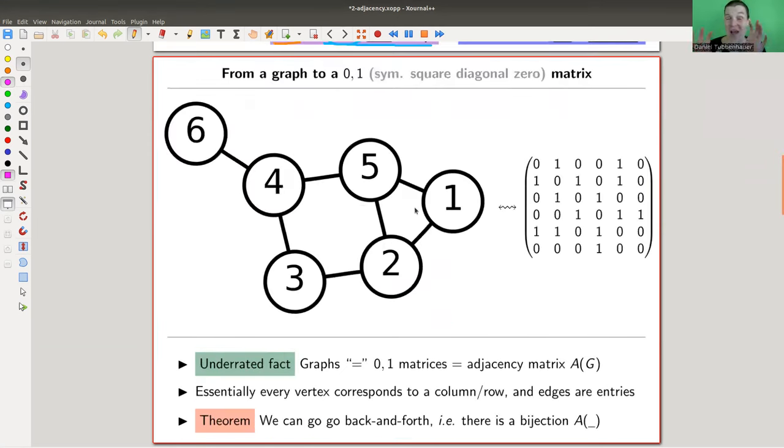But let's start with graphs. So simple graphs, here's a simple graph. And I would like to go to a matrix, and it will be a zero one matrix. And the zero one comes from my restriction of having a simple graph, which means I never have double edges. But essentially, I can go from a graph to a matrix as follows. I label my vertices one, two, three, four, five, six.